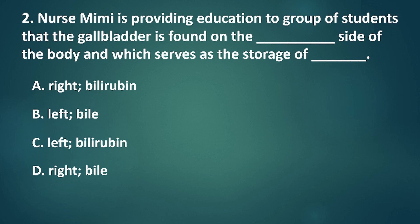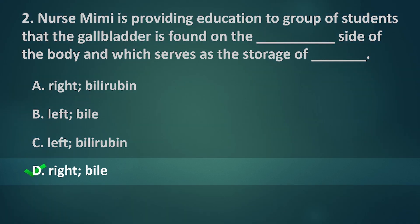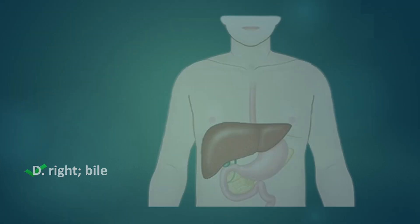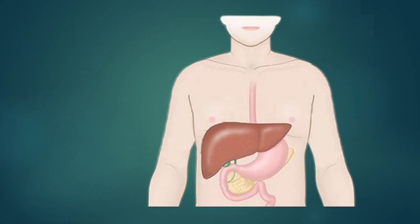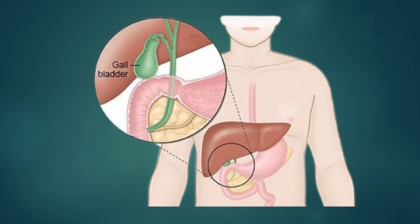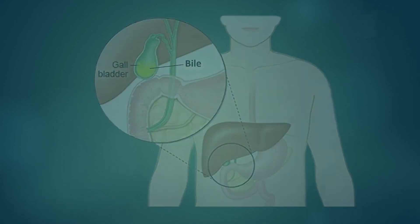The correct answer is letter D: right side, bile. The gallbladder is located underneath the liver, which serves as the storage of bile that emulsifies fat from the food we eat.